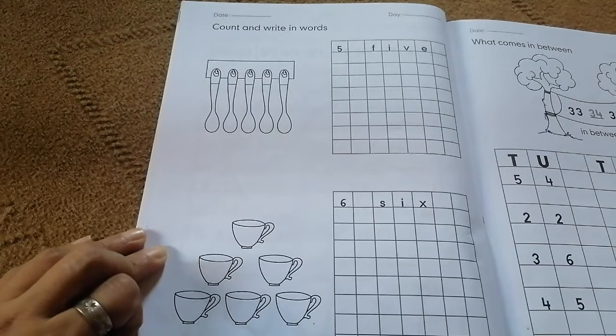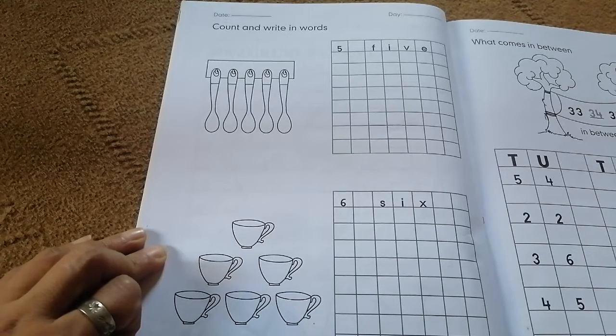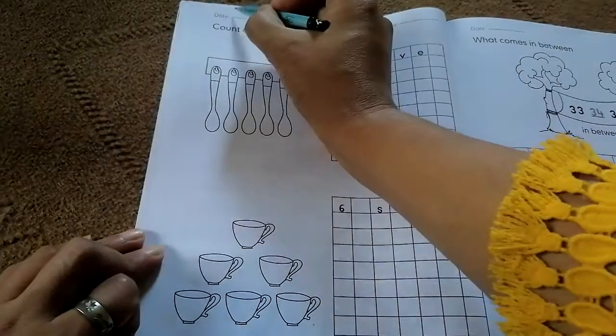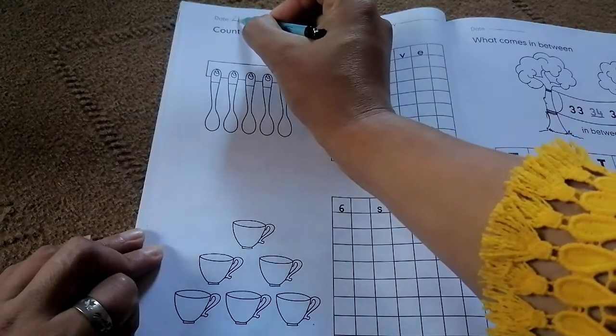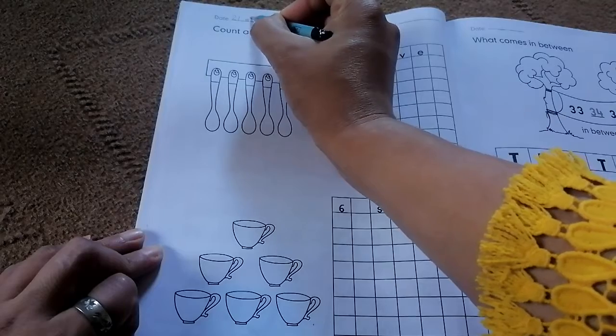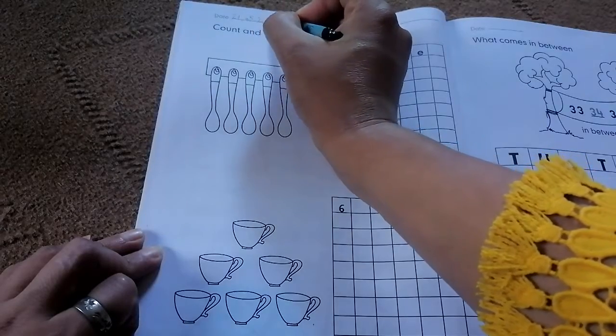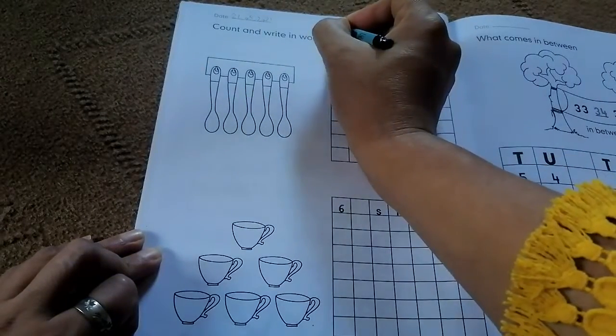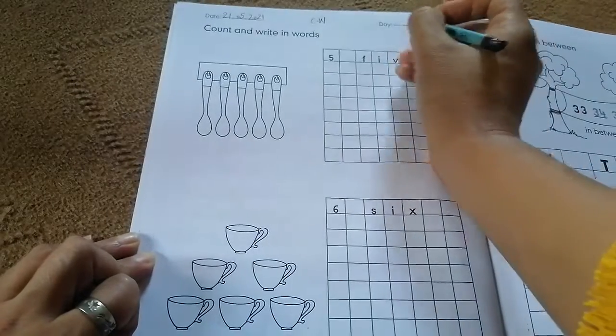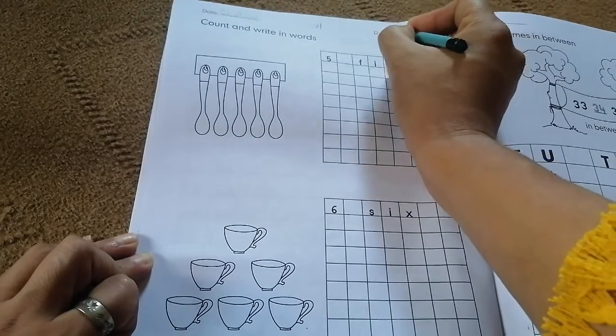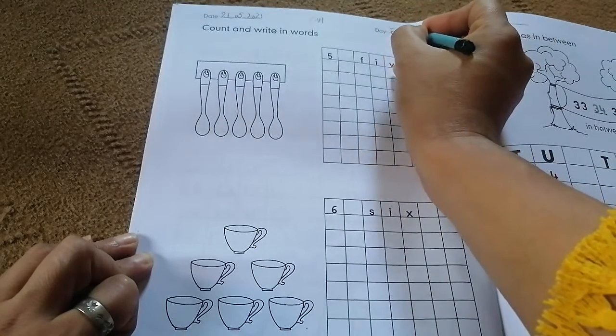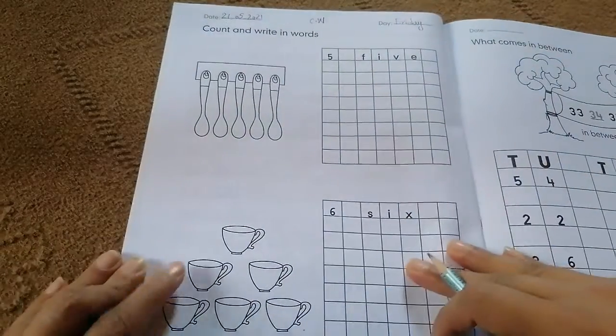Bismillahirrahmanirrahim, assalamu alaikum students. Open your maths workbook page number 10. First write down the date. Today is 21, month is May, and 2021. Classwork and day is what day is today? Today is Friday, F-R-I-D-A-Y, Friday.